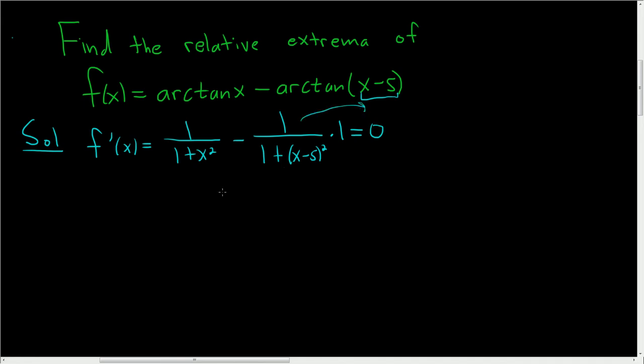Now we'll add this to the other side. So 1 over 1 plus x squared, and that's equal to 1 over 1 plus x minus 5 squared. Once we get here, we can use what's called cross-multiplication, always fun to use. So we get 1 plus x minus 5 squared equals 1 plus x squared, just simply cross-multiplying.